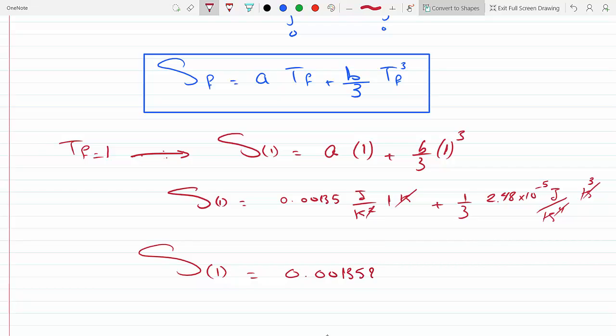S of 1 will be 0.001358 kelvin, I'm sorry, joules per kelvin.